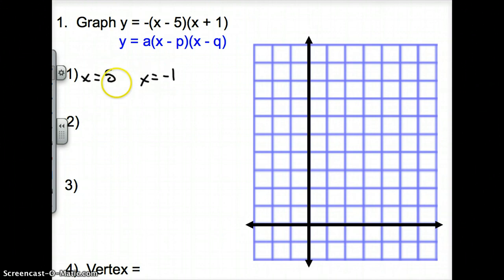So first thing we do now is go ahead and plot these. x is 5, 1, 2, 3, 4, 5, and negative 1. So from the origin, we go to the left, negative 1. Next, we have to find the axis of symmetry. We add these two guys up. So we add 5 plus a negative 1, divide that by 2. And that's going to give us 4 over 2, which simplifies to 2.